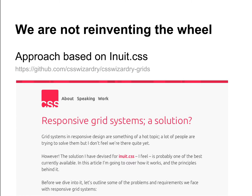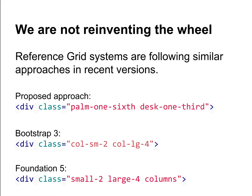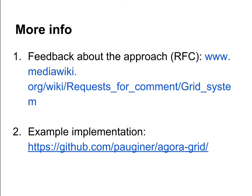This is nothing really new. These concepts are based on the Inuit CSS framework. And if we look at the recent versions of reference grid systems, they seem to adopt similar concepts recently. So in our proposed approach, what we define as one-sixth and one-third for PALM and DESK, the Bootstrap framework defines it as small-two, assuming a twelve-column grid, and large-four. Foundation does the same. If you want to get more information, you can check the request for comments or the example implementation. Thanks.